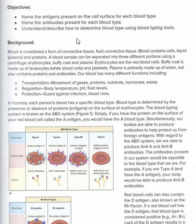The universal recipient is AB positive, because they don't have antibodies against A, against B, or against the rhesus monkey factor — so they can take anybody's blood. You should know who the universal donor is and who the universal recipient is, because they always like to ask that on tests.